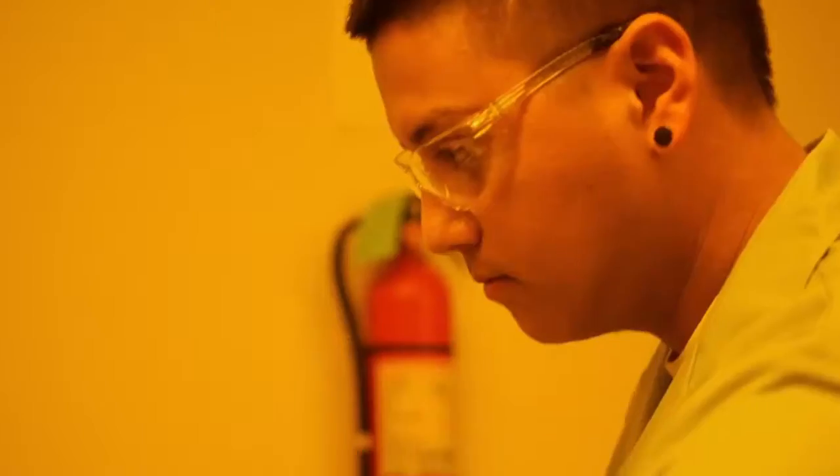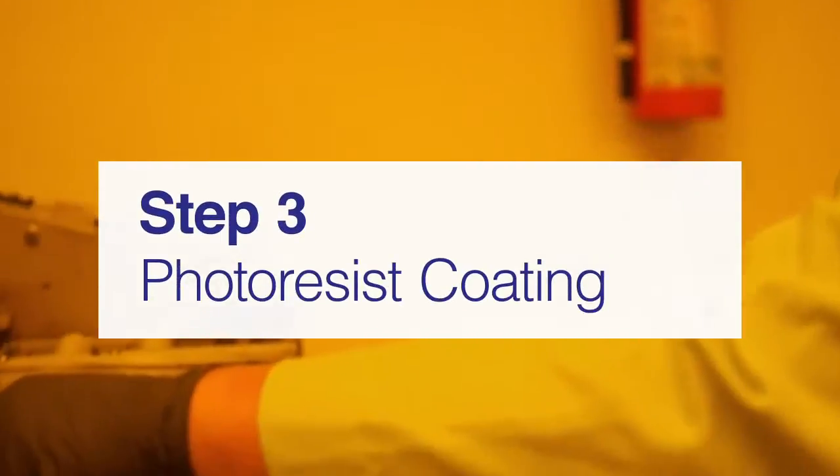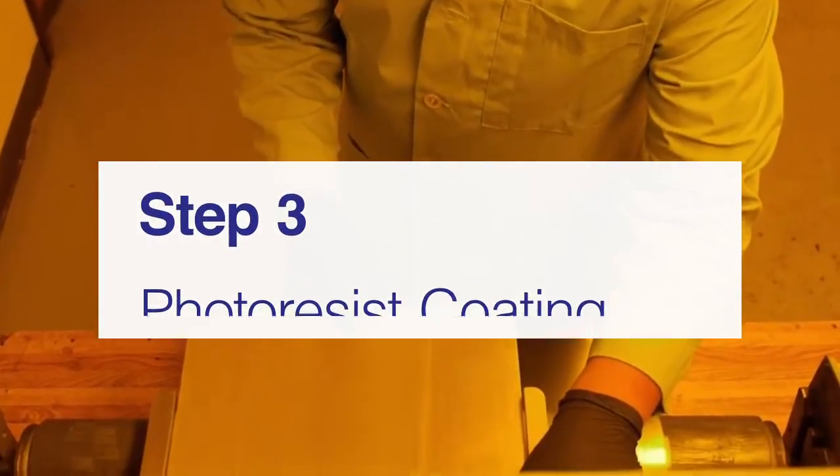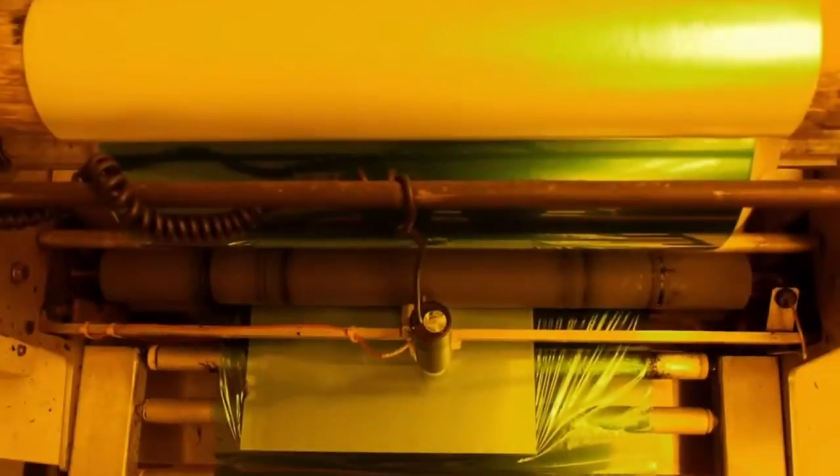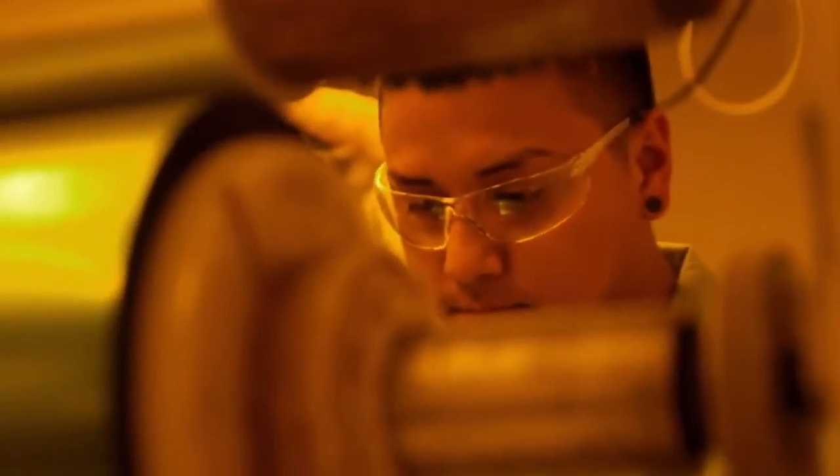Once the material has been adequately cleaned, it's then coated with a photosensitive resist. Resist is photosensitive in that it's sensitive to light and it's resistant in that it's resistant to the acid that we'll be using as we create the parts.